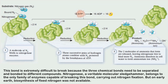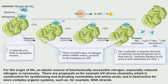But on early Earth, biosynthesis of fixed nitrogen was not available for the origin of life. An abiotic source of biochemically accessible nitrogen — especially reduced nitrogen — is necessary. There are proposals such as UV-driven chemistry, which is constructive for synthesizing and activating nucleotides and amino acids, but destructive for more complex organic systems such as DNA strands.